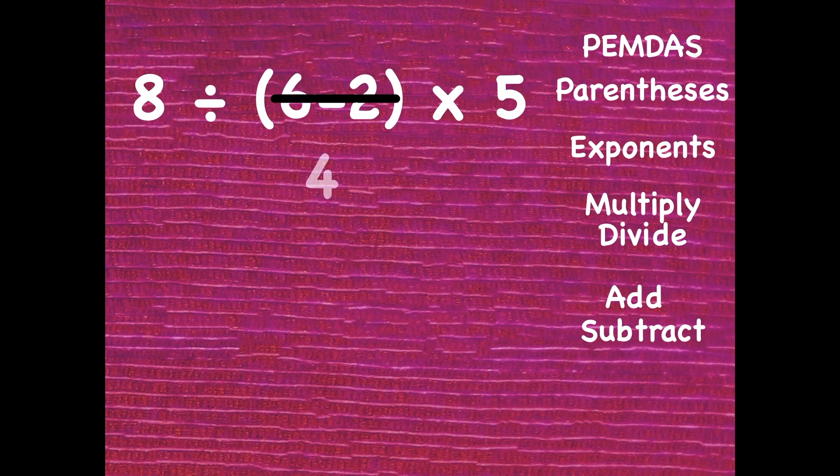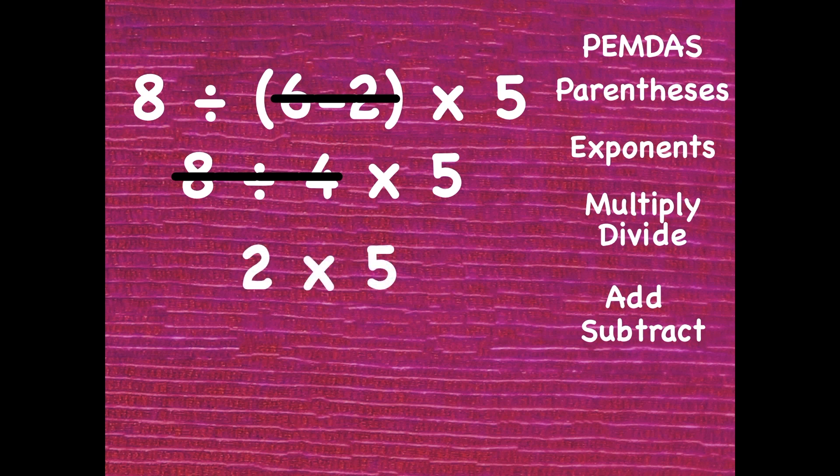Now that you're done simplifying, compare your work with mine. The first thing I did was I solved inside the parenthesis, and that was 4. And then I brought the rest of the problem straight down. So 8 divided by 4 times 5. The next step is multiply or divide whichever comes first. They're the same step, multiplication and division. So 8 divided by 4 is 2. And I brought the rest of the problem straight down. Just solving one step at a time. 2 times 5 is 10.